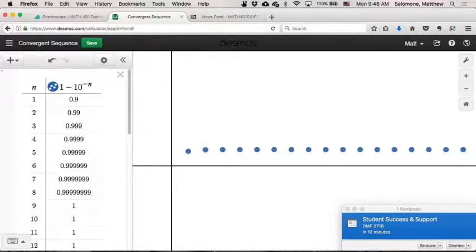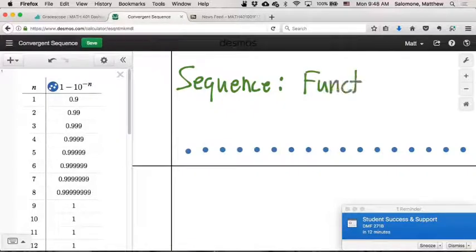And so just by way of definition, what a sequence of real numbers is is it's a function. So this is kind of a weird way to think about it, but bear with me for a second. It's a function which assigns to any natural number an element of the reals.